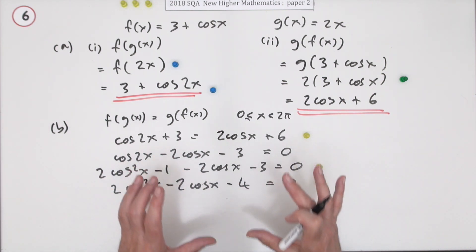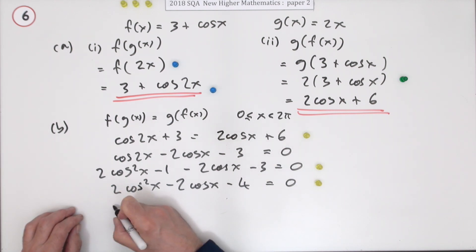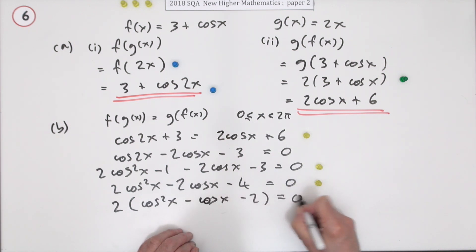Which is completely correct, even though they say do not penalise the absence of the factor of 2. Or you can keep them happy for whatever reason and take the factor out and leave it uselessly sitting there. Since 2 can obviously never be 0, cos squared x minus cos x minus 2 equals 0. Now we're going to factorise it.